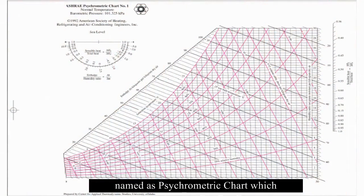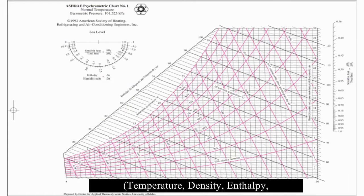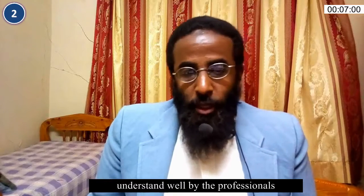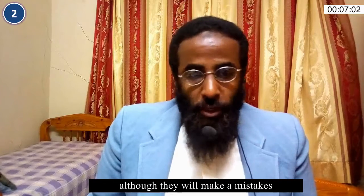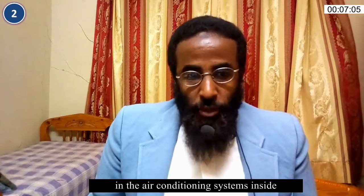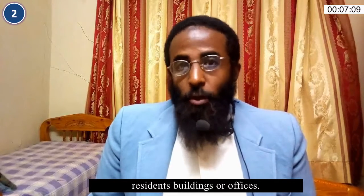The famous chart in air conditioning, named the psychrometric chart, is used by HVAC engineers to determine the relationship between many parameters like temperature, density, enthalpy, relative and specific humidity, and so on. It is a very useful chart which must be understood well by professionals, as mistakes in reading it affect air conditioning systems inside residential buildings or offices.